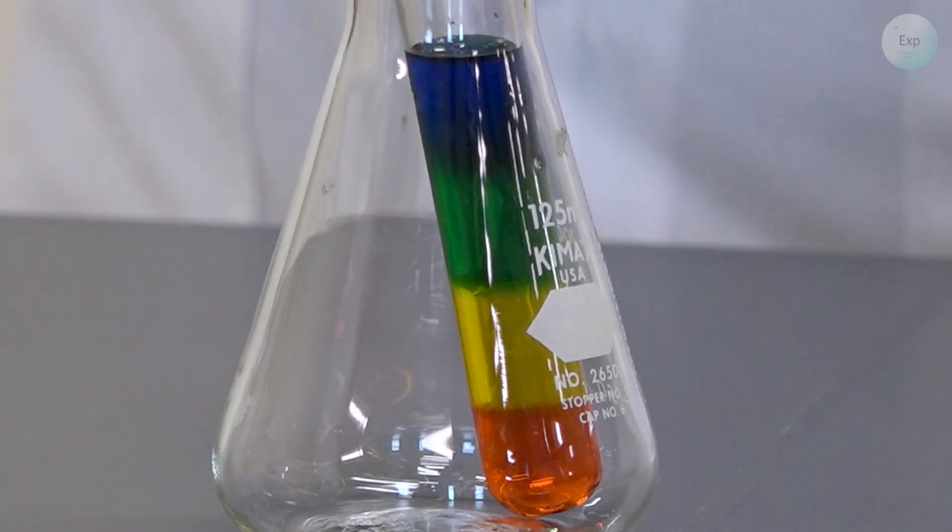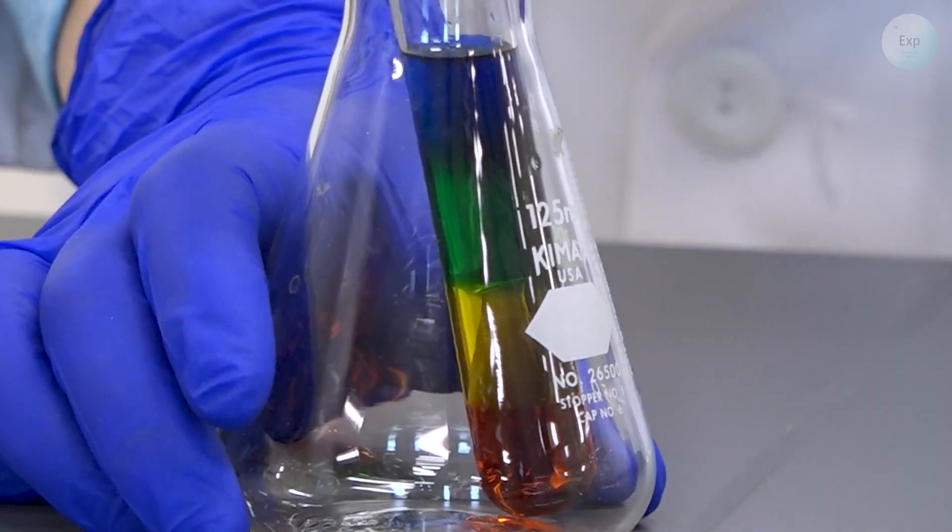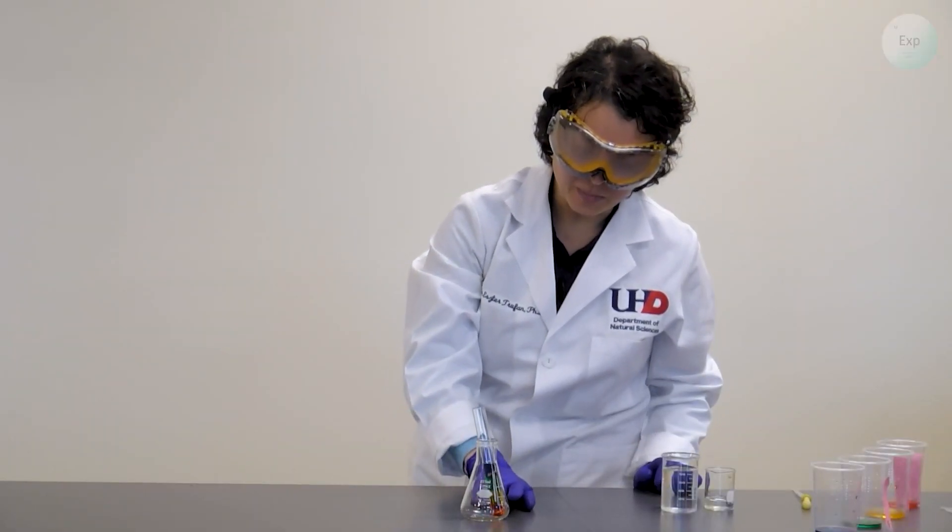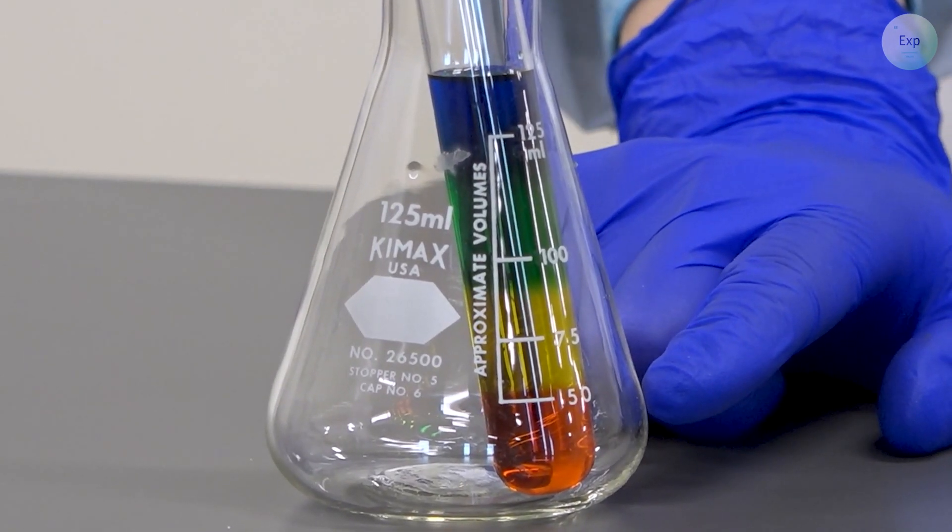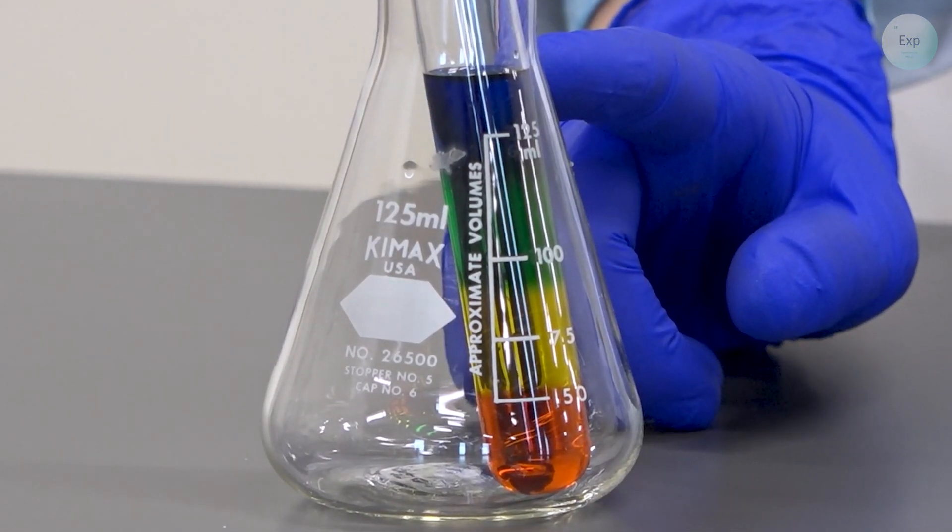And with that, we have our four layers inside the test tube, and they are all clearly identifiable. We have the red-orange on the bottom, then we have the yellow, the green, and then the blue at the very top.